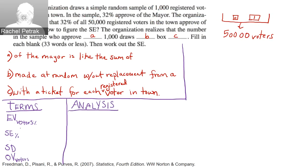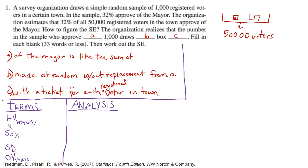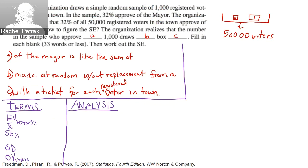The mean of the box corresponds to the expected value of the voters — it'll be a proportion. So we do need the mean of the box, or technically the estimated mean. We'll get lots of terms along the way here.